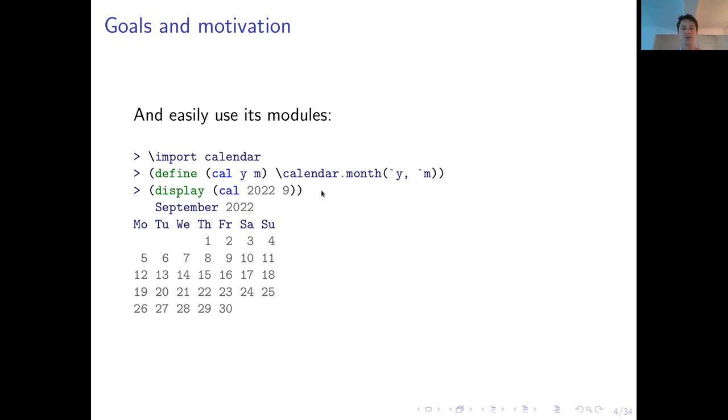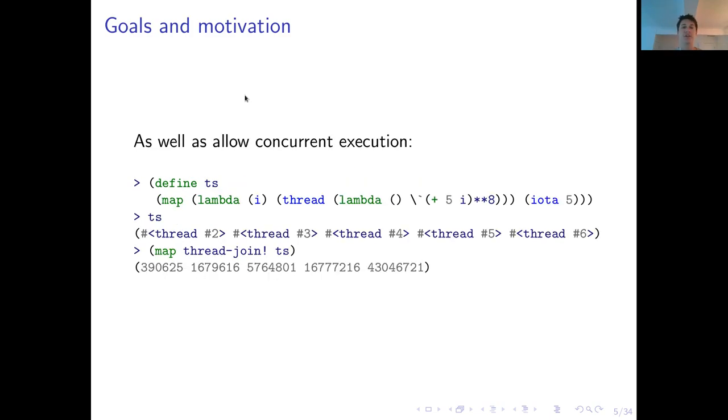We also want to be able to easily use its modules. So we want to be able, for example, to import the Calendar module, define a Scheme surrogate for the calendar.month method, and actually display the result. And we also want all of this to be done concurrently. As you see here in the example, we can create a list of threads using the Gambit thread procedure. From within the thread procedure, we want to execute some Python function. And all of these threads have to be running concurrently.